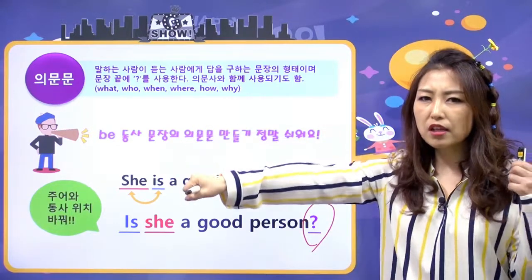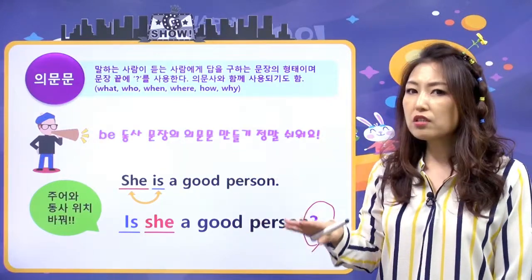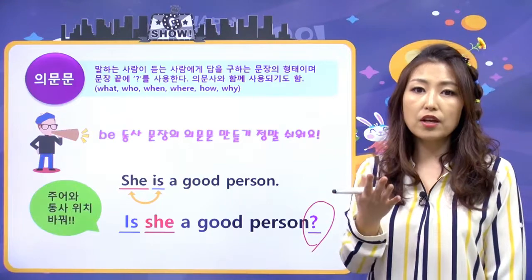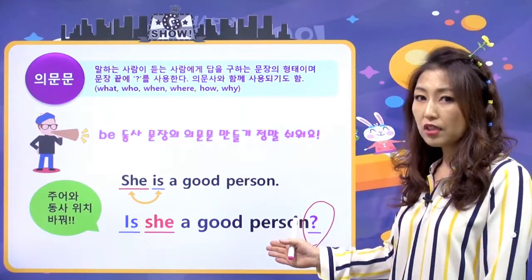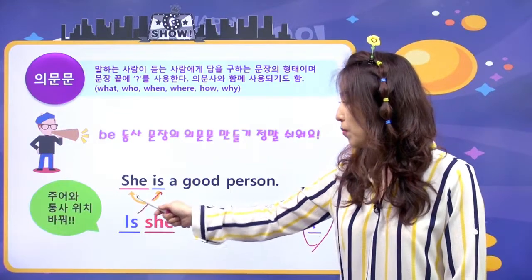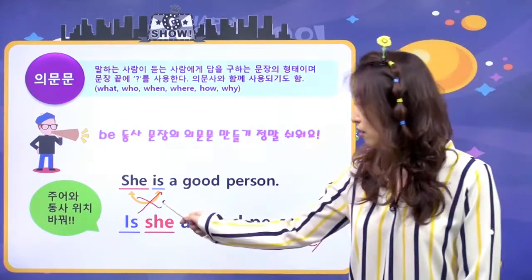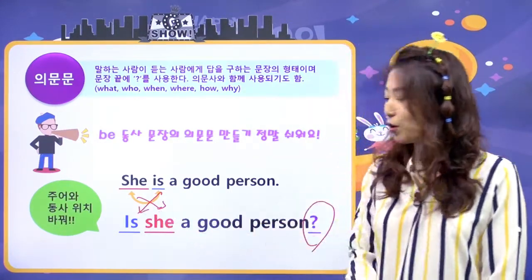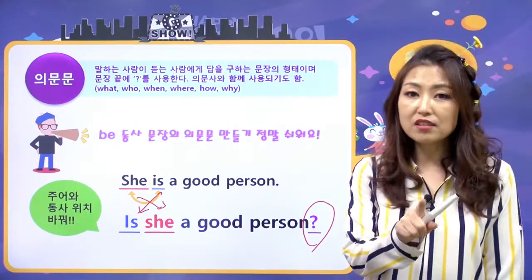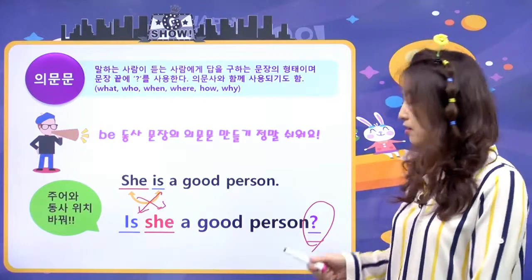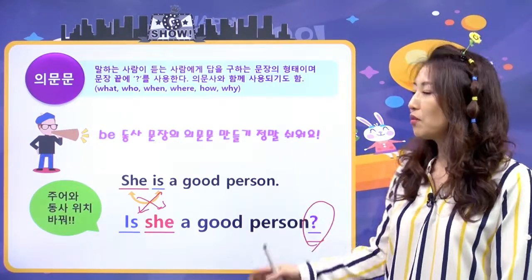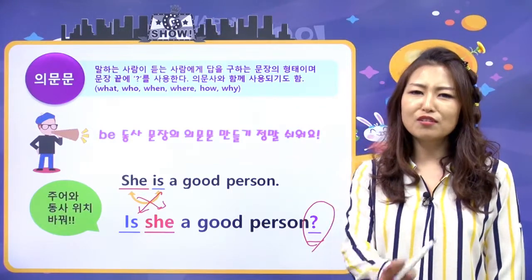동사의 변신파워 할 때 동사의 위치가 변경됨에 따라서 문장의 종류가 바뀐다라는 거 했었잖아요. 그게 바로 이 예예요. 비동사와 주어의 자리를 바꿨을 뿐인데 의문문이 됐어요. 의문문 끝에 반드시 question mark, 물음표를 사용합니다. 비동사 문장의 의문문 만드는 건 너무 쉽죠?